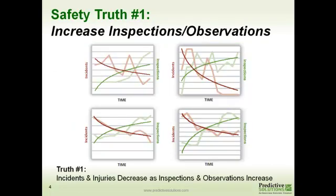We have thousands of locations, facilities, and projects within our database, and we've seen this happen across many different locations. In these four instances, the green line — the number of inspections, audits, and observations — goes up, while the red line, which is injuries, goes down. In certain cases, it's just a matter of getting people out there looking at conditions, behaviors, and situations that are putting people at risk. Increasing the quantity influences the probability of people getting hurt.